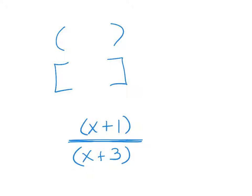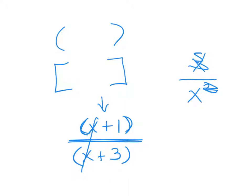I can't just cancel an x on top of an x when there's a plus sign, because the plus sign makes the terms attached. In x over x, I can simplify — but in x + 1 over something, I can't, because the x is attached to the 1. In order to simplify binomials, the bottom has to look identical to what you're canceling.